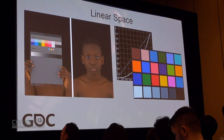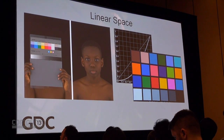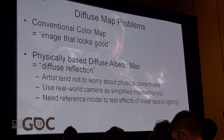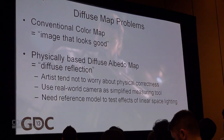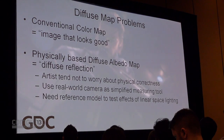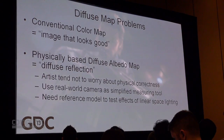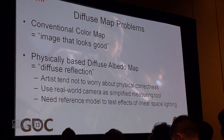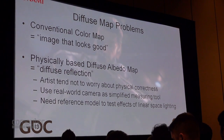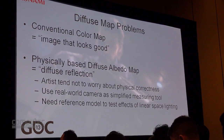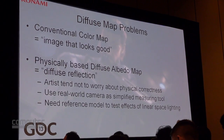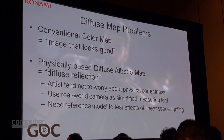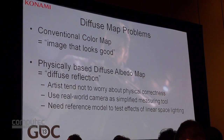When working in linear space, the most important and difficult problem we faced was the way to create diffuse maps. Using conventional color maps, the artist's job was only to make a texture that worked. In physically based rendering, on the other hand, the artist has to be aware of diffuse reflection. To make our texture references, we use a real world camera and use the captured raw image without correction. Artists are used to creating assets that look good without worrying about detailed parameters, but this would create problems in linear space. So in order to test if the results look natural in linear space lighting, we needed to create a reference model — this model is the conference room.